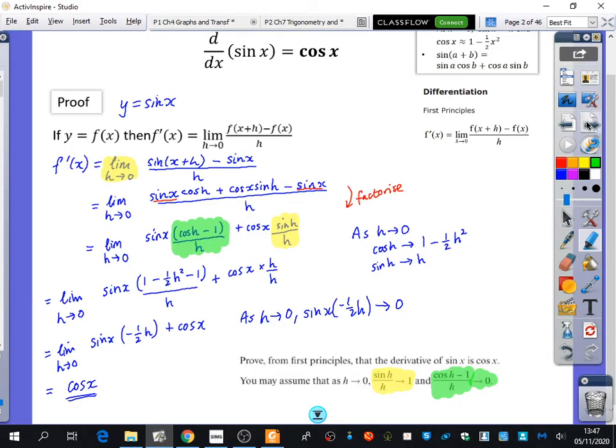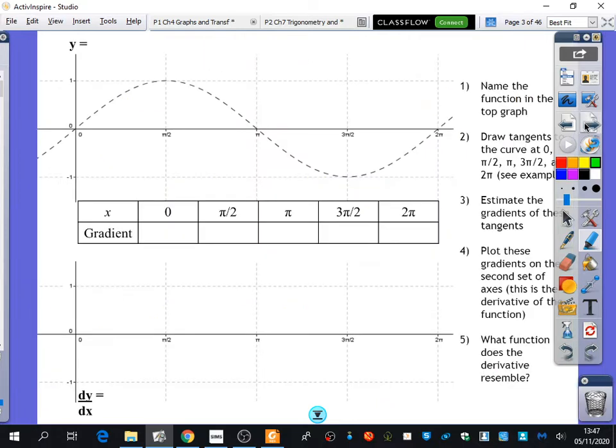So the next thing that I wanted to have a look at here was where maybe the proof is quite abstract and what does that proof really mean. I mean we're just seeing it with fractions and things.